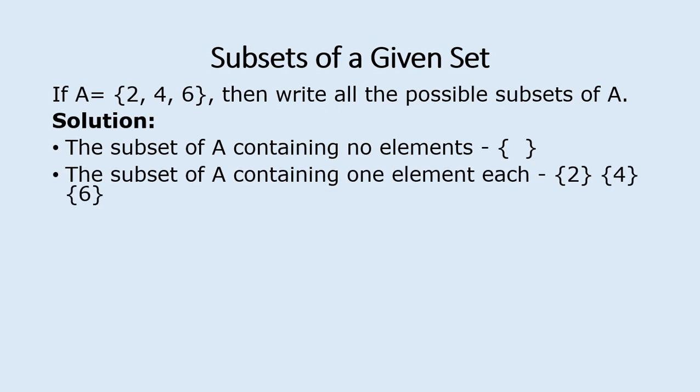We also know that we can have subsets that contain only one element — one for each element in the given set. So we'll have three subsets containing one element: the set containing only 2, the set containing only 4, and the set containing only 6. These are the singleton sets.